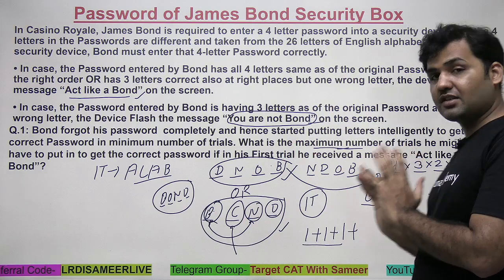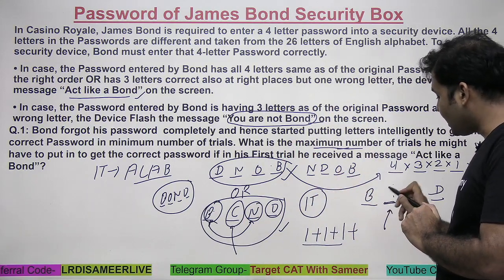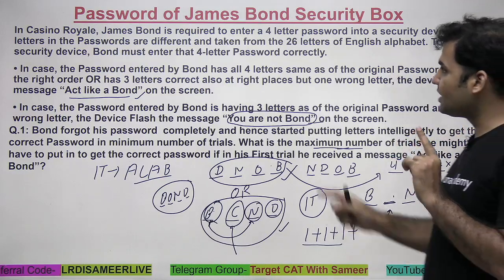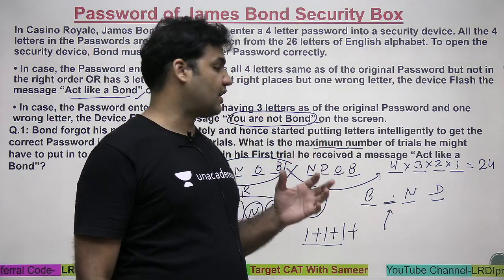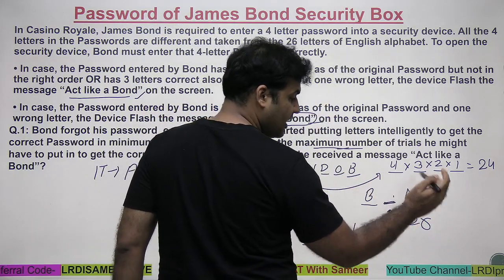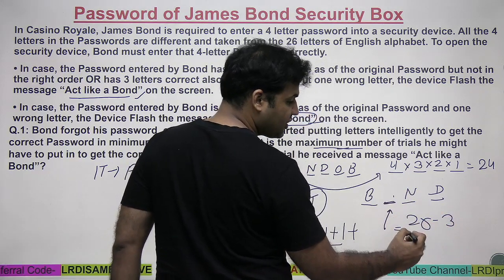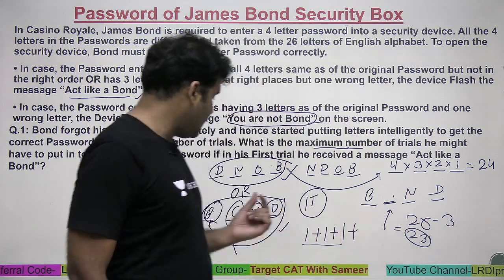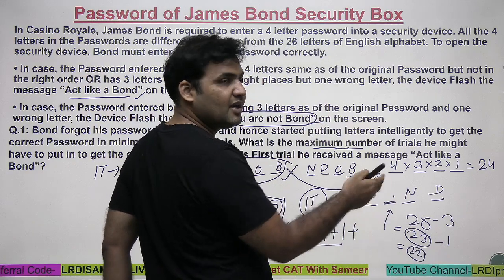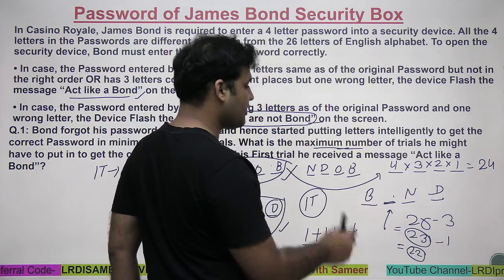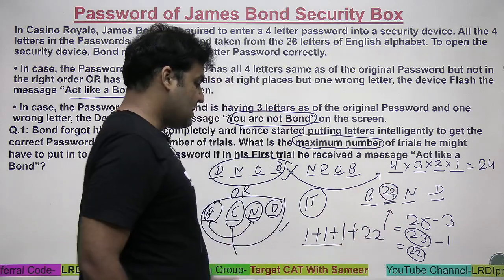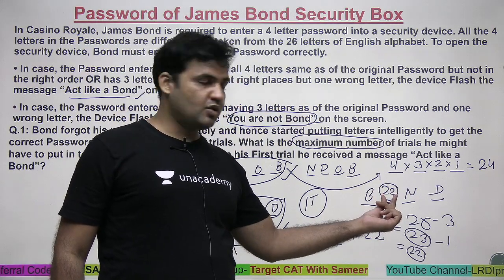Now he knows that the second letter C is wrong and that B and D are correct letters at their right positions. He needs to find what letter actually goes in that second position. Since all four letters of the password are different alphabets from the 26 English letters, and three letters have already been used, the unknown letter must be one of the remaining 23. Also, C has already been rejected, so he has 22 more letters to try. In the maximum case, he needs 22 more trials to find the correct letter — say O comes at the 22nd position.